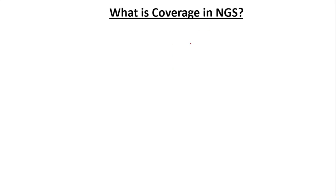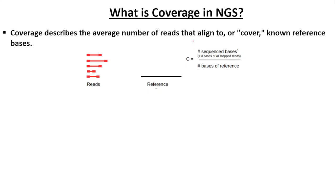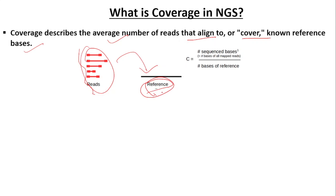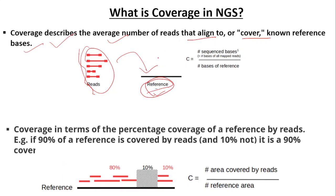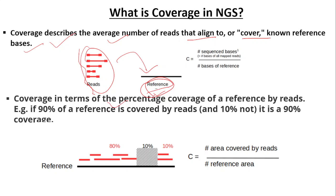What is coverage in next-generation sequencing? Coverage describes the average number of reads that align to or cover known reference bases. Coverage can also refer to the percentage of the reference covered by reads — for example, if 90% of a reference is covered by the reads.